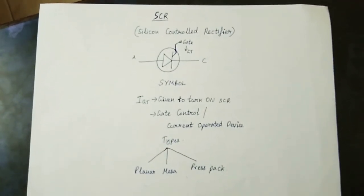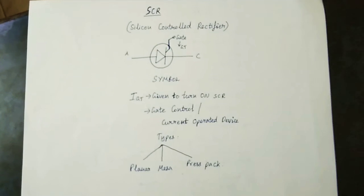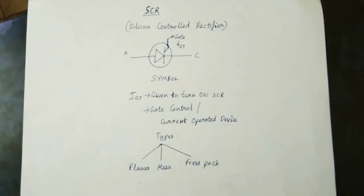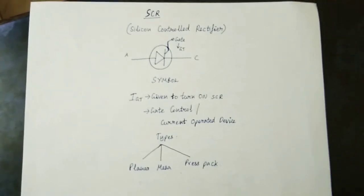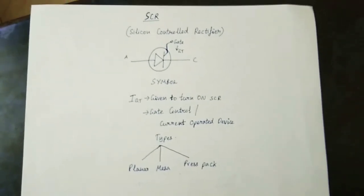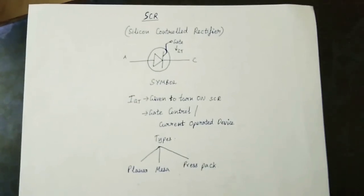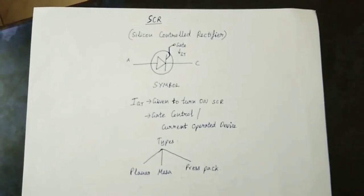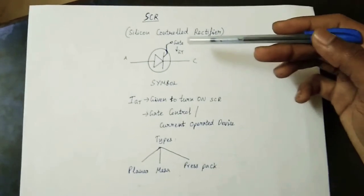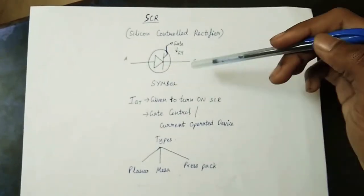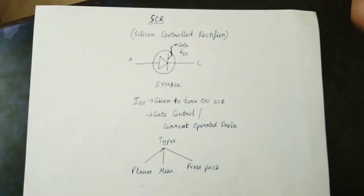SCR is a Silicon Controlled Rectifier. It is a very primary thyristor type and is used among many thyristor types. It is a very dominant thyristor. The SCR is simple — there are simple gates, anode and cathode, and a base current.